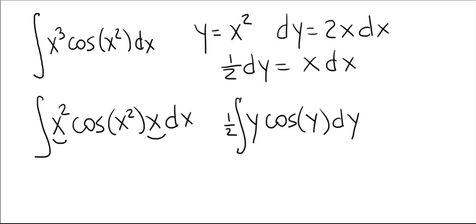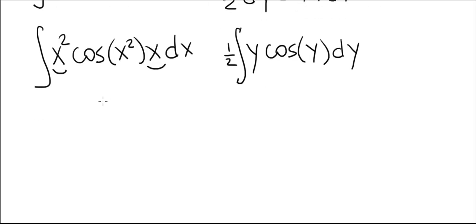We're going to put 1 half aside and come back, multiply the answer we get by 1 half at the very end. So I want to integrate y cosine of y dy, using integration by parts.